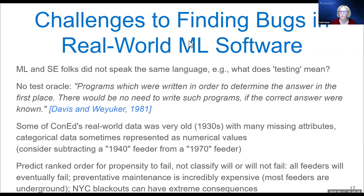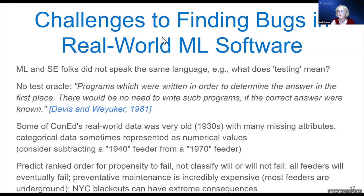Another problem was there was no test oracle. This is what Davis and Weyuker called non-testable programs — programs written in order to determine an answer that nobody knows ahead of time. If people knew which feeder was going to fail next, there would be no need to write the program. So there was no oracle telling us what the next feeder to fail would be, unless you waited for it to actually fail.